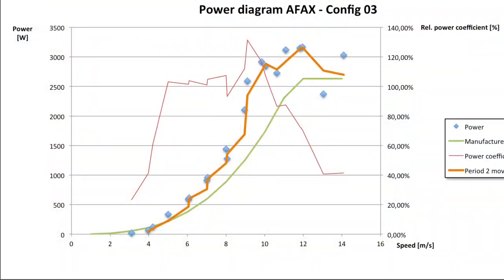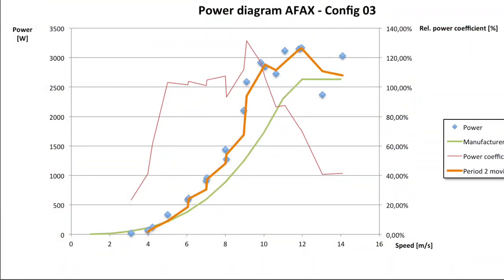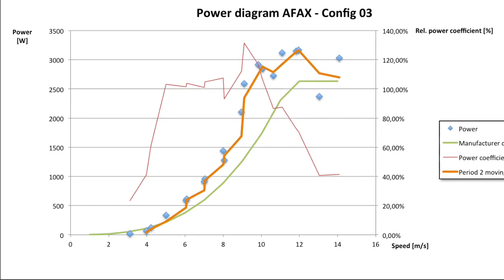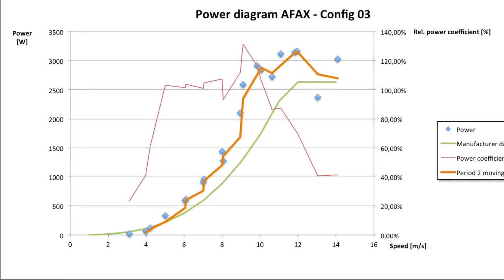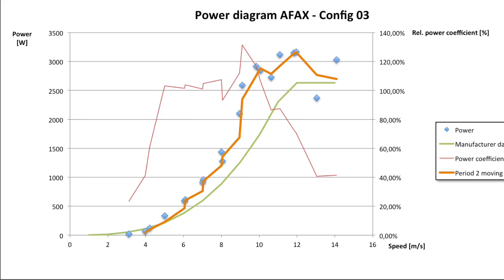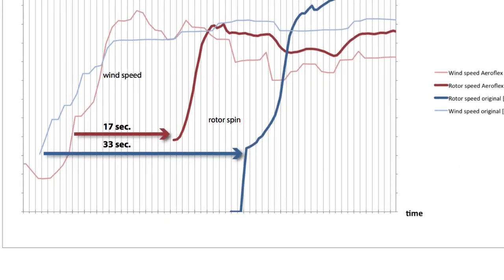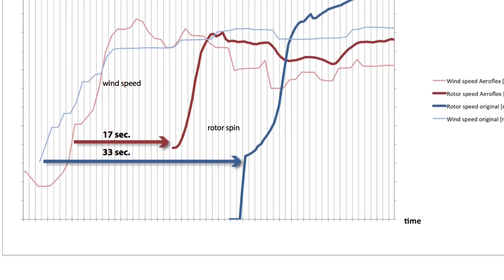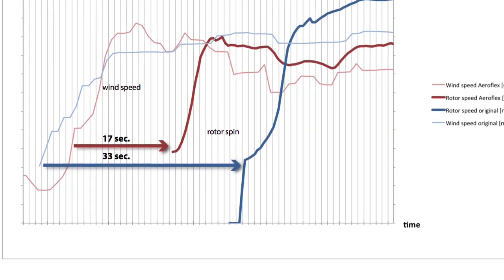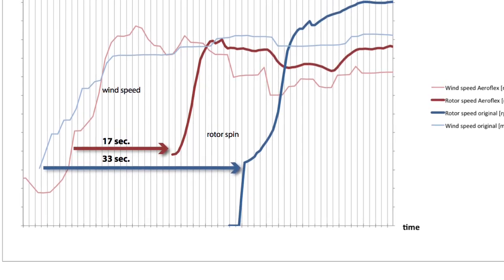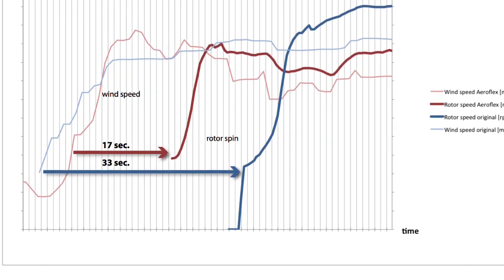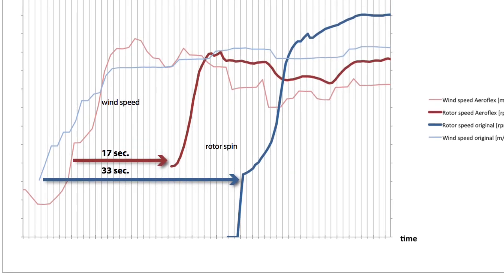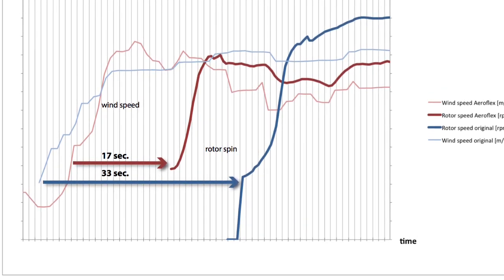Here you can see a resulting power curve diagram. The green power curve shows the original blade, while the orange curve shows our Aeroflexible rotor blade. The startup time is also very impressive: the original blade takes 33 seconds until the rotor reaches operating speed, while the Aeroflexible rotor blade only needs 17 seconds to reach the same speed.